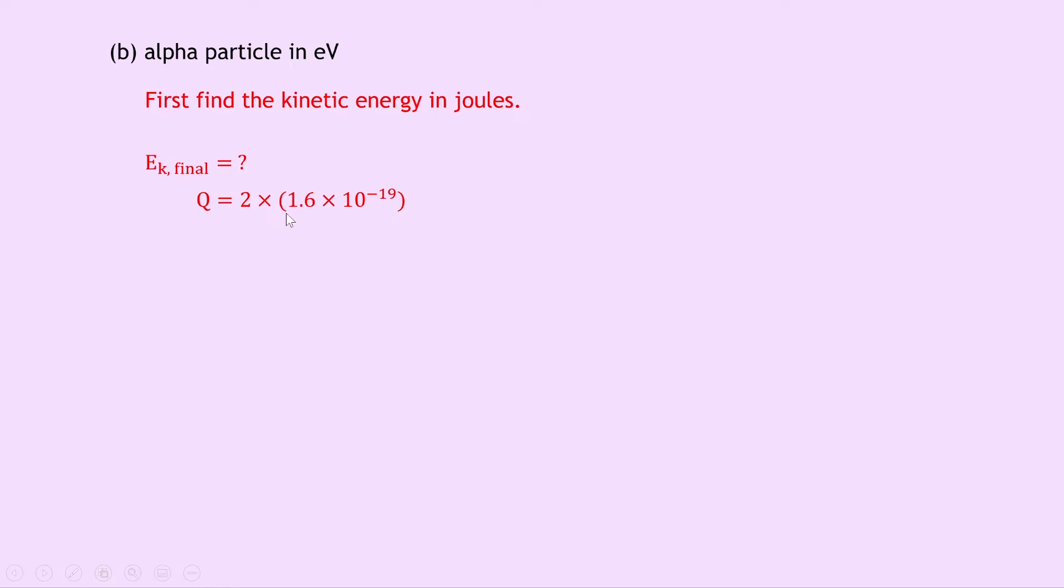Because there's two of them we times the proton charge by two, and we get 3.2 times 10 to the minus 19 coulombs. We also know the potential difference is 20 volts. Just like in part A we can say work done equals the change in kinetic energy, equal to EK final minus EK initial. We can simplify this because EK initial is equal to zero since the particle starts at rest. Then we can rewrite this as QV equals EK final, or EK final equals QV which is 3.2 times 10 to the minus 19 times 20. Putting that into your calculator we get an energy of 6.4 times 10 to the minus 18 joules.